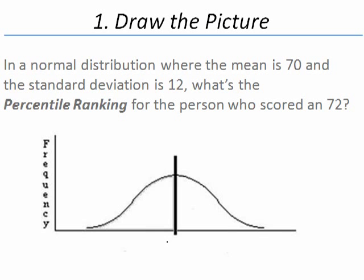Our first step is to draw the picture so we can visualize what is going on. Our mean is 70 and our value is 72. Notice that we have drawn two lines to our normal distribution. That divides the normal distribution into three areas.